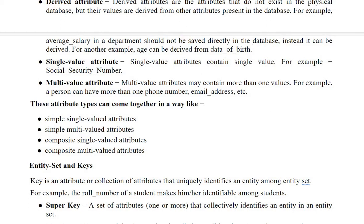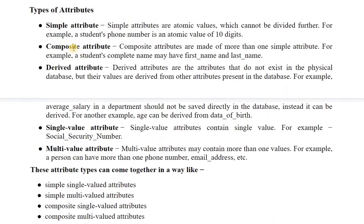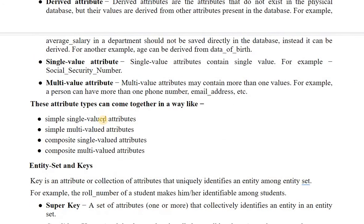A single-value attribute contains only one value, like a roll number or security number. A multi-value attribute may contain more than one value — for example, a person can have more than one phone number or email address. These attribute types can come together in combinations: simple single-valued attribute, simple multi-valued attribute, composite single-valued attribute, and composite multi-valued attribute.